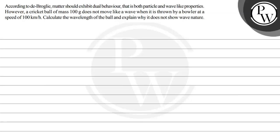matter should exhibit dual behavior that is both particle and wave-like properties. However, a cricket ball of mass 100 grams does not move like a wave when it is thrown by a bowler at a speed of 100 kilometers per hour. Calculate the wavelength of the ball and explain why it does not show wave nature.